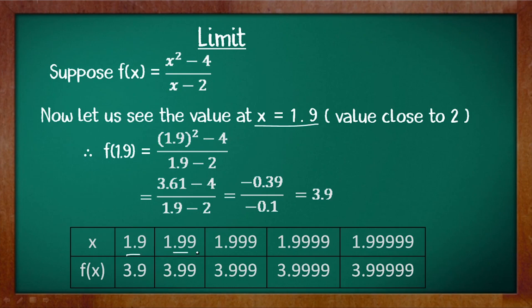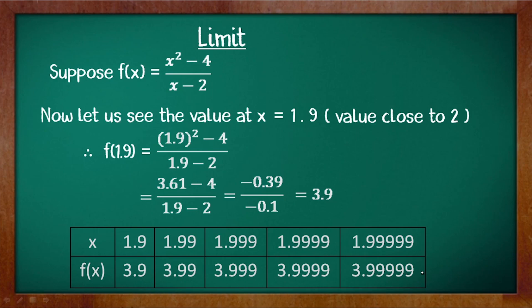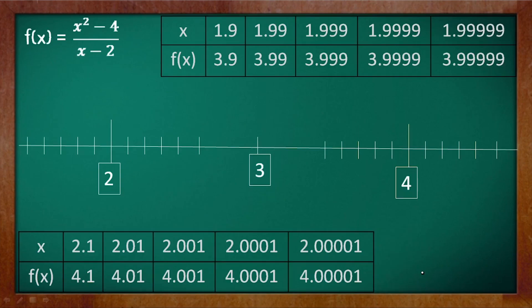Here are the values from the left side: x = 1.9 gives f(x) = 3.9; x = 1.99 gives 3.99; x = 1.999 gives 3.999; x = 1.9999 gives 3.9999, and so on. You can check the authenticity of this data with a calculator.